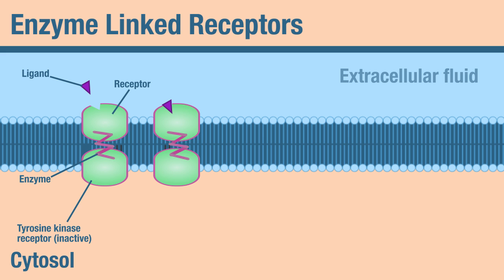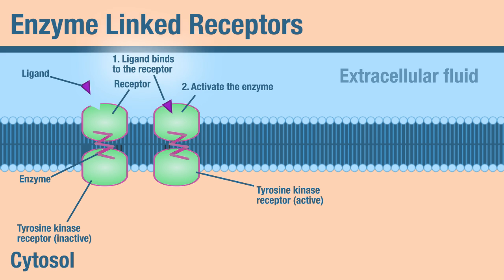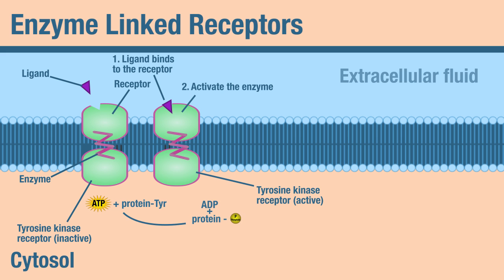Here we're dealing with tyrosine kinase. Once the ligand binds to the receptor in step one, that activates the enzyme — tyrosine kinase. Kinase always phosphorylates, so here we are using ATP to phosphorylate a protein. When you phosphorylate a protein, you get a response inside of the cell.